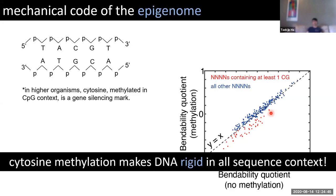Cytosine methylation makes DNA rigid in all sequence contexts. The implications are still to be explored — it could be changing nucleosome stability, changing how RNA polymerase negotiates the chromatin template, or changing chromatin remodeling itself. Because our tissues have different methylation patterns of cytosine, there is a possibility that methylation can have an impact on how different tissues function through changes in DNA mechanics — something to be explored in the future.